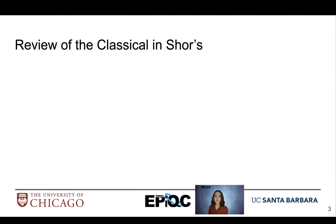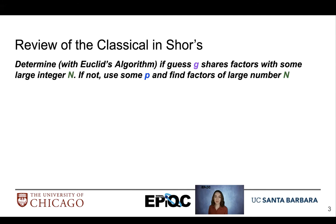Let's review the classical components of Shor's algorithm. We have a large number n, and we hope to factor it. So we first make a guess of a factor, and we'll call that g. We'll use Euclid's algorithm to determine if g shares factors with n. If we find that g shares a factor with n, we're done. That's highly unlikely though. So if not, we are going to find some p to help us find factors of that large number n.